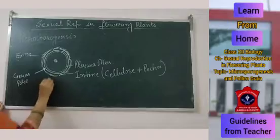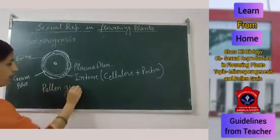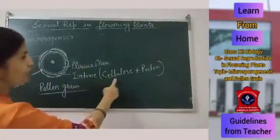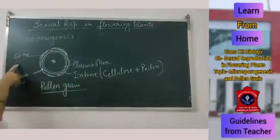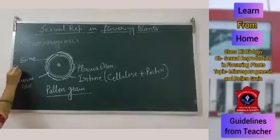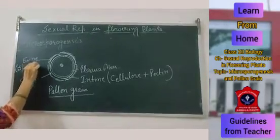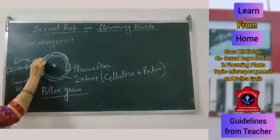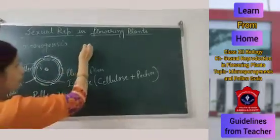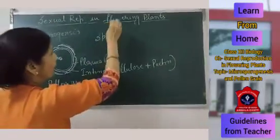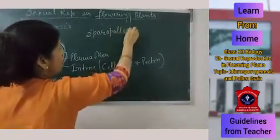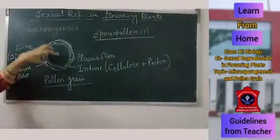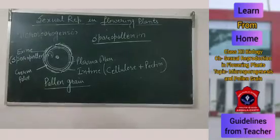The pollen grain has three layers: the innermost plasma membrane, then the intine which is made up of cellulose and pectin and is thin, while the outermost is the exine which is made up of a chemical substance known as sporopollenin. This sporopollenin is formed from the tapetum layer. Sporopollenin is resistant to pH as well as acid action and even enzyme action. That is why pollen grains can be preserved as fossils and can remain for years without being destroyed.